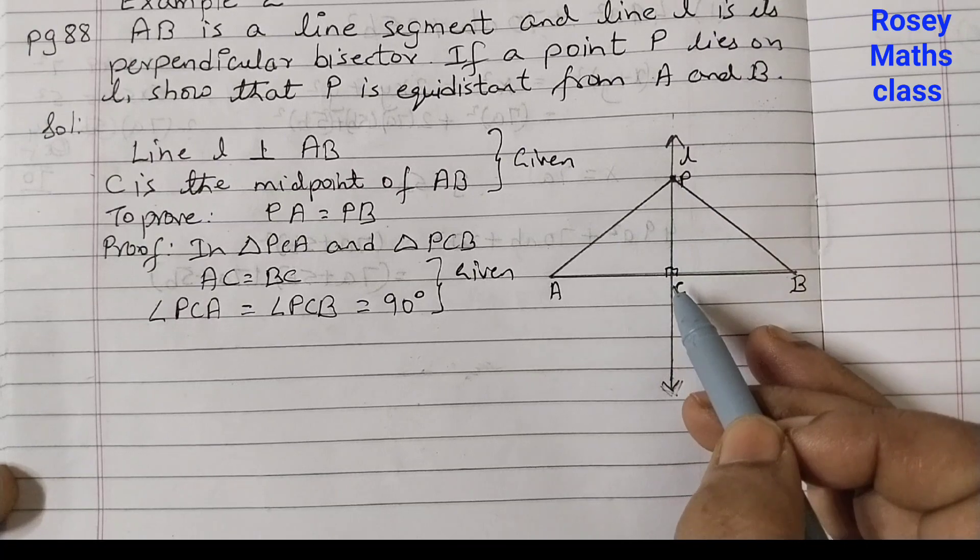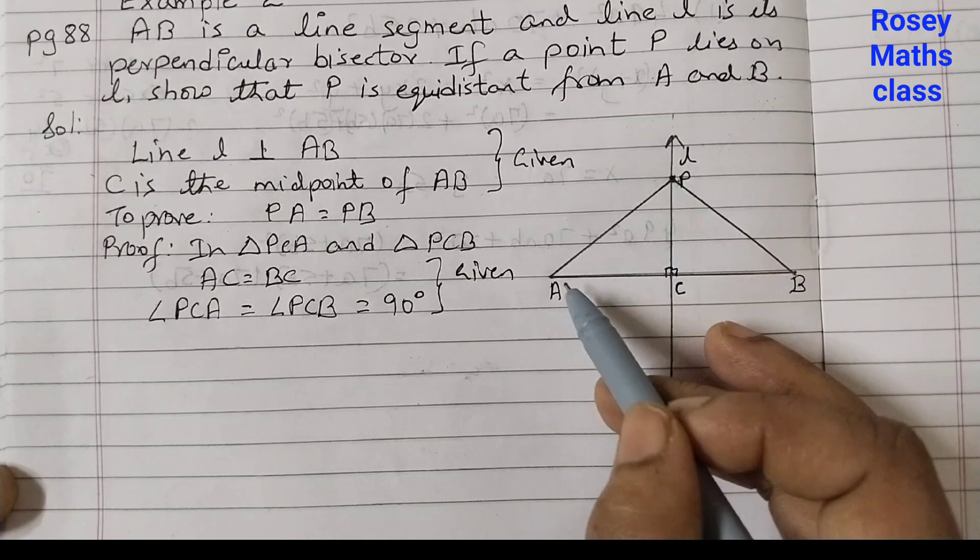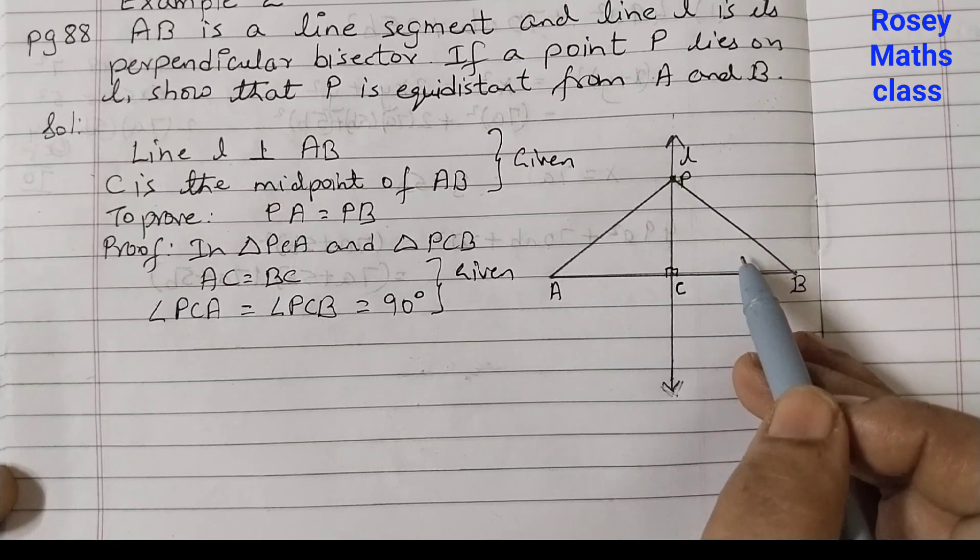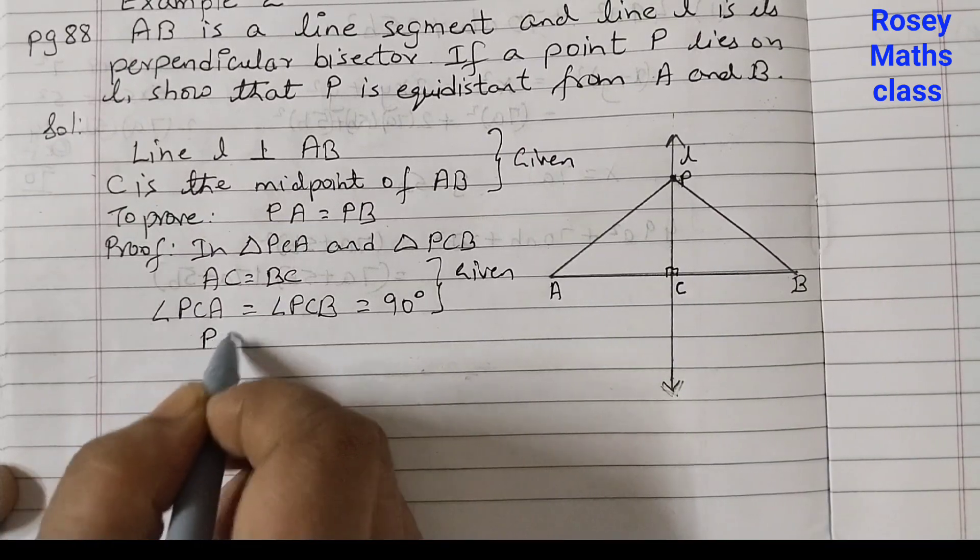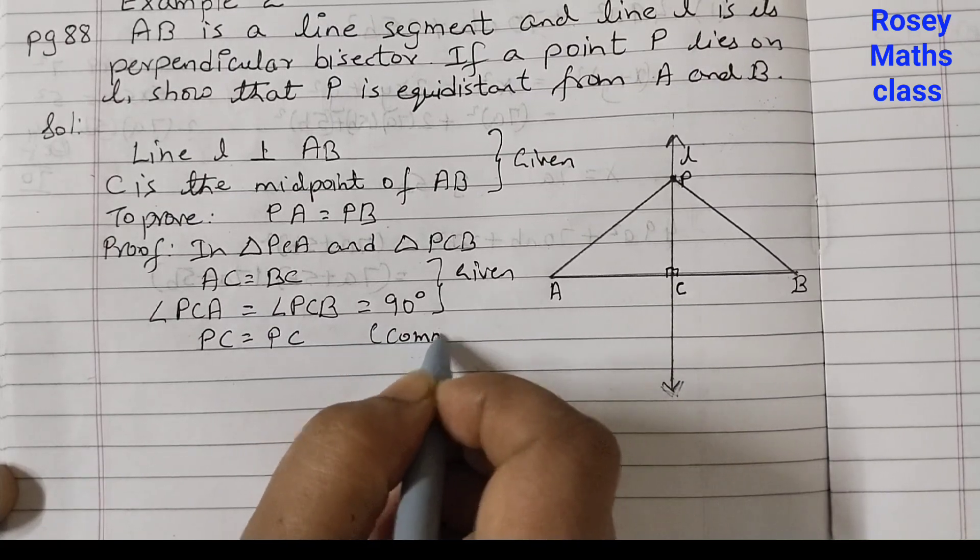Now PC is common to both the triangles. PC is a part of this triangle also and the second triangle also. PC is equal to PC and the reason we can write is common.